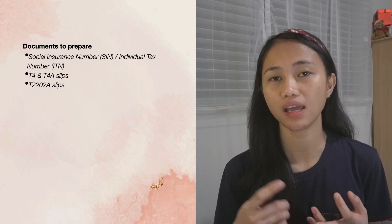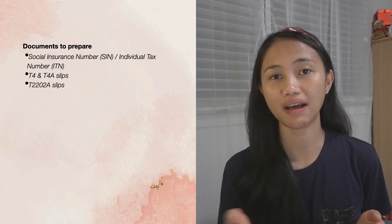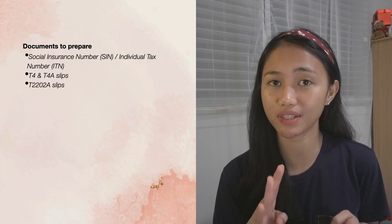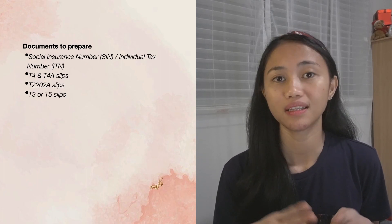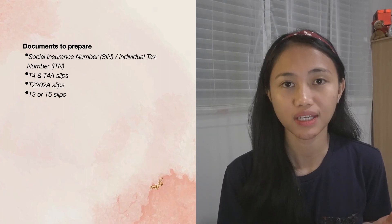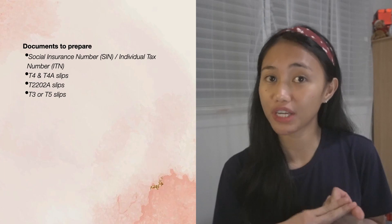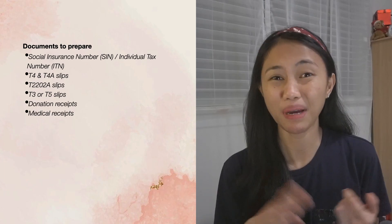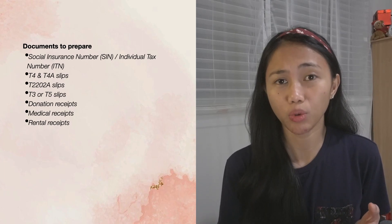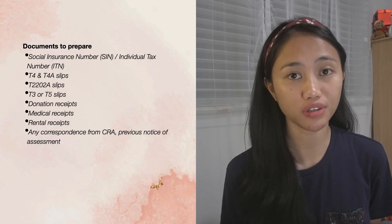The T4A and T2202A slips can be accessed on your student service portal, and the school should have them ready by the first or second week of January. You'll also need interest tax slips — T3 or T5 — if you made investment income from mutual funds; contact your financial institution for a copy. Additionally, you'll need donation receipts for any Canadian charity donations, medical receipts for out-of-pocket medical expenses, rental receipts from your landlord, and any correspondence from CRA if you've filed taxes in Canada before, including your Notice of Assessment.